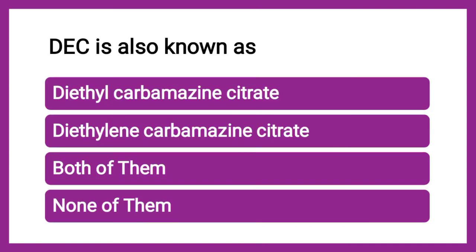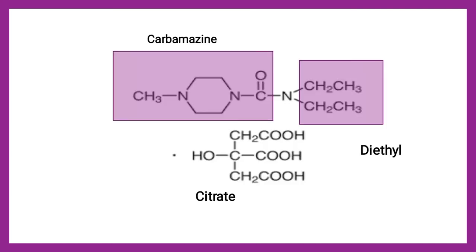Next question: DEC is also known as — diethyl carbamazine citrate, diethylene carbamazine citrate, both, or none. The correct answer is diethyl carbamazine citrate, which is an anthelmintic drug. In the structure, two ethyl groups (CH2CH3) are present — making it diethyl — attached to the carbamazine moiety, as a citrate salt.